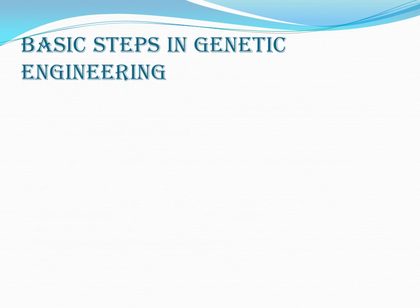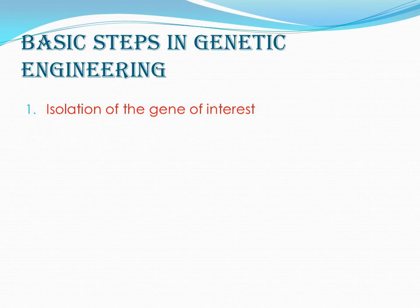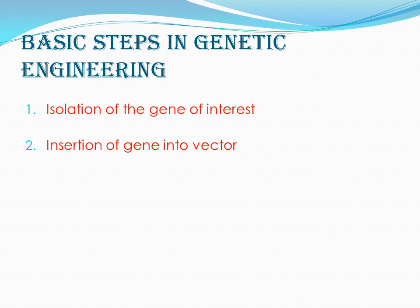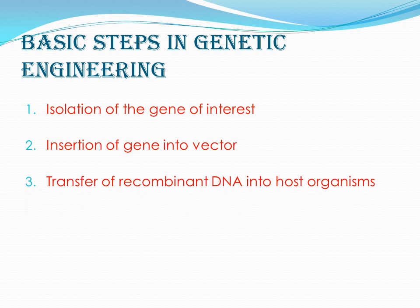The basic steps in genetic engineering are as follows. First is the isolation of the gene of interest — we can isolate the gene of interest from any organism. Second is the insertion of the gene into a vector, which is a carrier. By inserting the gene into the vector, the vector then carries the gene of interest, forming recombinant DNA, which is transferred into the host organism.